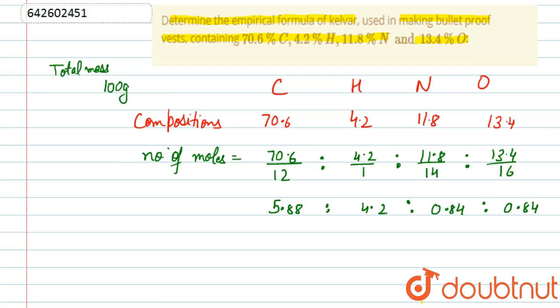Now we will simplify these ratios by dividing them by 0.84, this is the smallest number here. So we will divide each number by 0.84.